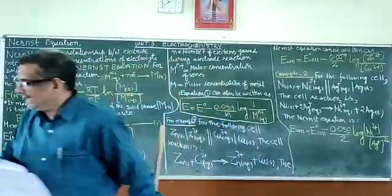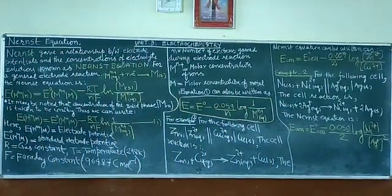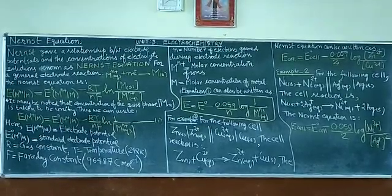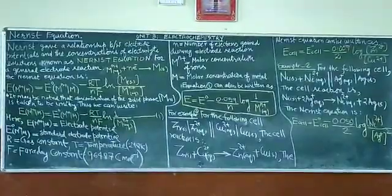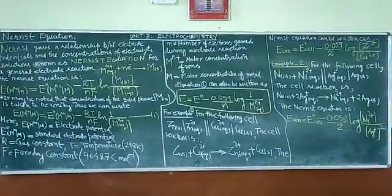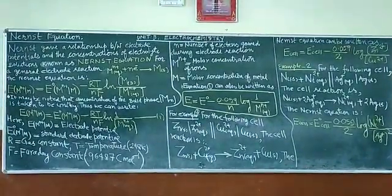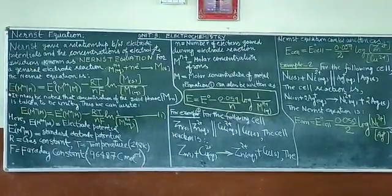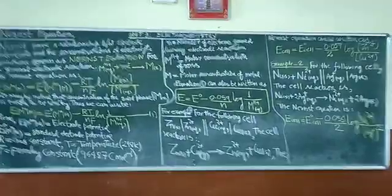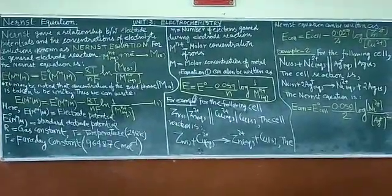I was telling you that the standard electrode potentials are measured in their standard states when the concentration of electrolyte solutions are fixed at one molar and temperature is 298 Kelvin. However, in actual practice, electrochemical cells do not always have fixed concentration of the electrolyte solution. The electrode potentials depend on the concentration of the electrolyte solution.